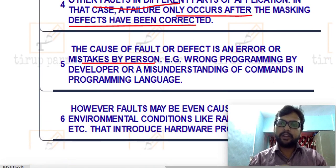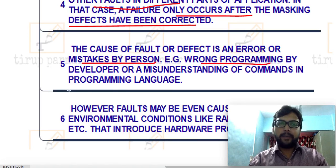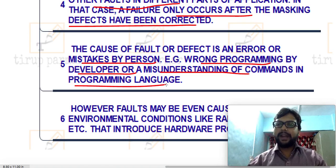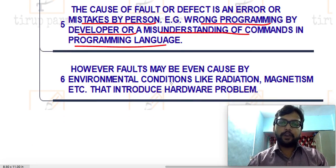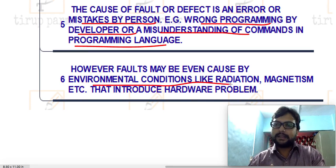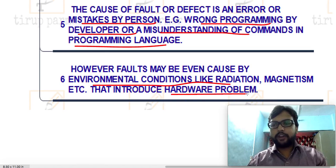The cause of a fault or defect is an error or mistake by a person. It is not always the programmer's mistake — there might be a problem from the person actually accessing the software. For example, wrong programming by a developer, or misunderstanding commands in the programming language and using the wrong command, which leads to a fault or failure. Faults may even be caused by environmental conditions like radiation or heat, or by hardware problems.